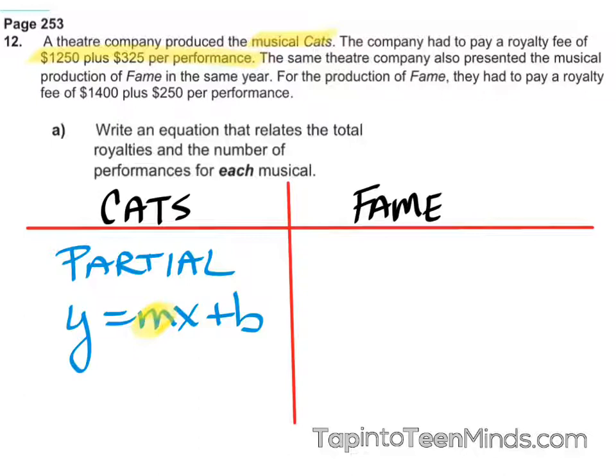Nicely done. Excellent. And how about B? What does B represent? The initial cost. Awesome. So another way to think of it: M represents the amount it goes up by every person, every show, or every kilometer, depending on the scenario, and B is the initial or upfront cost.